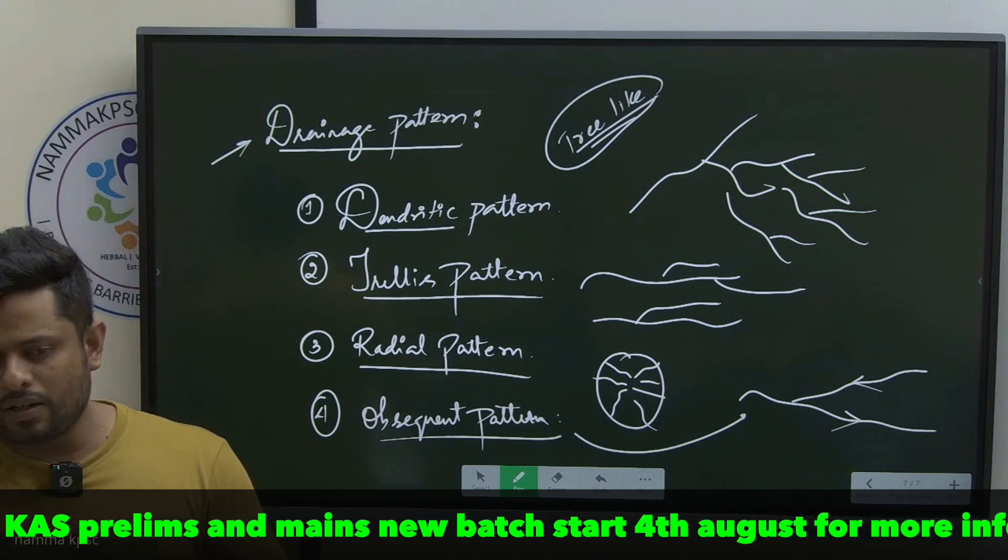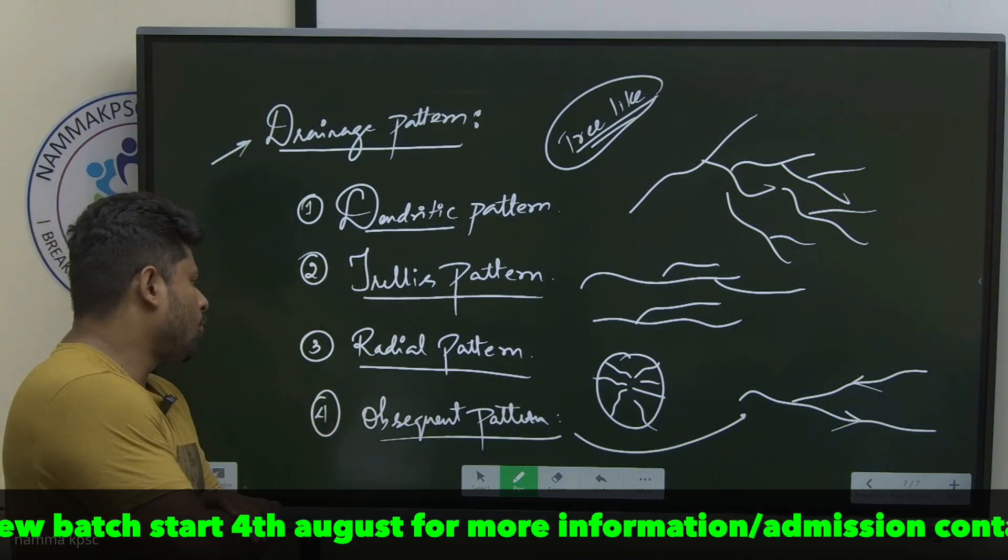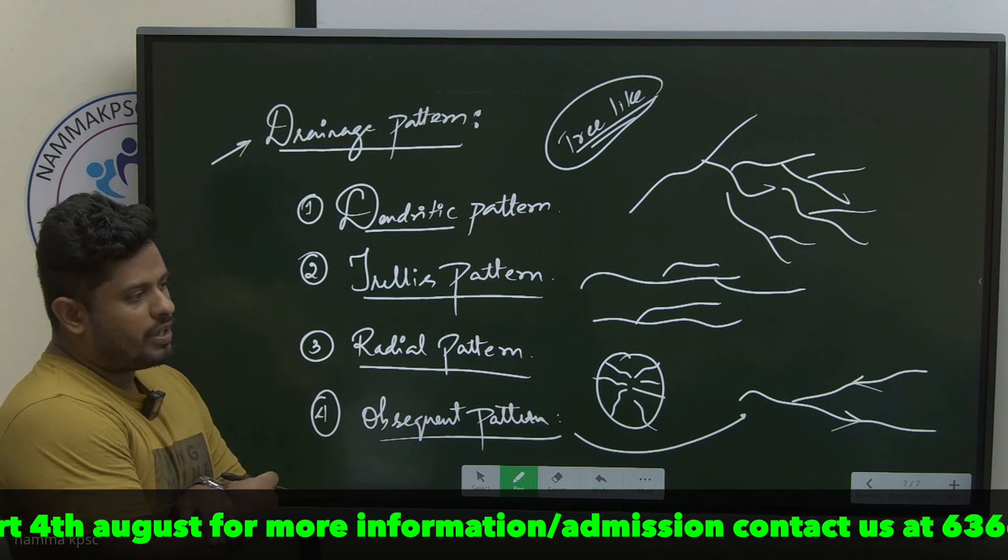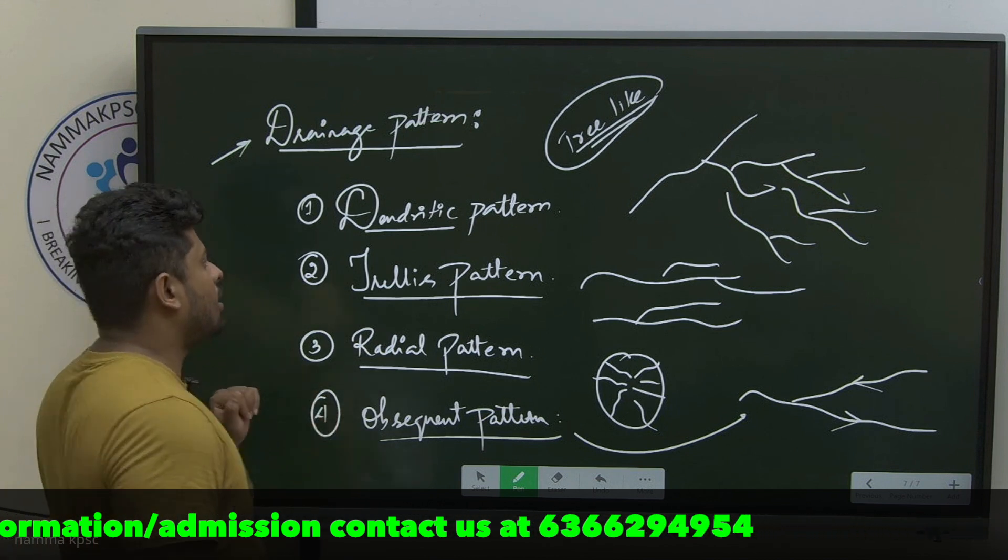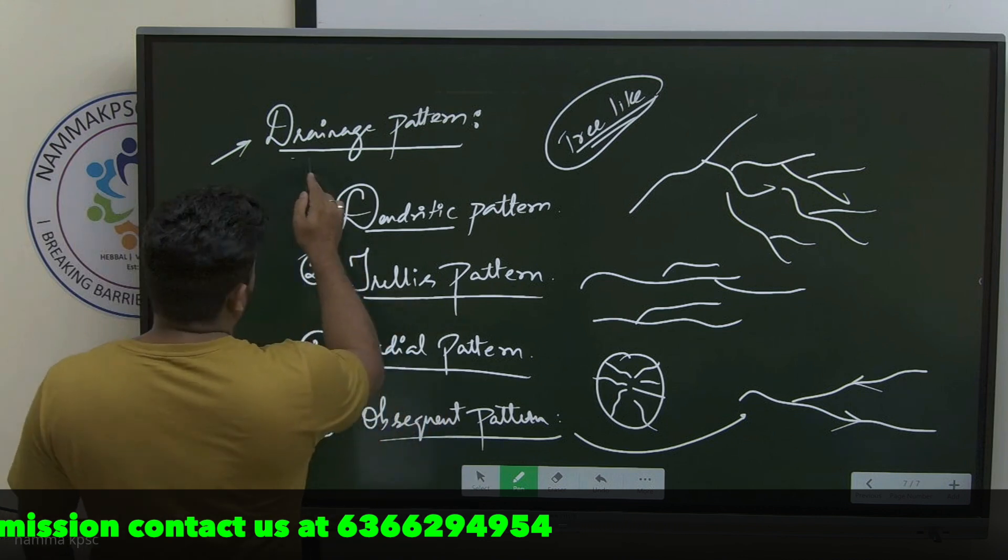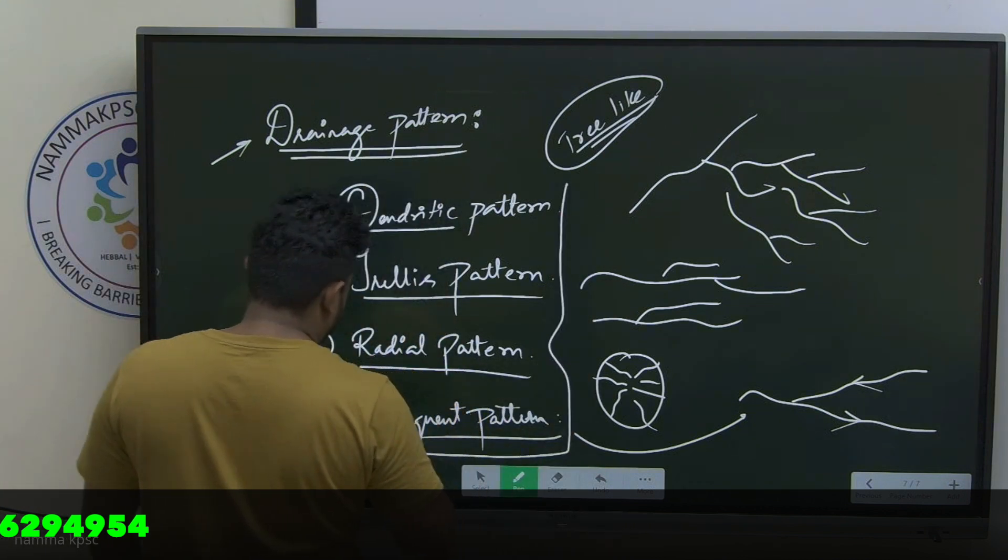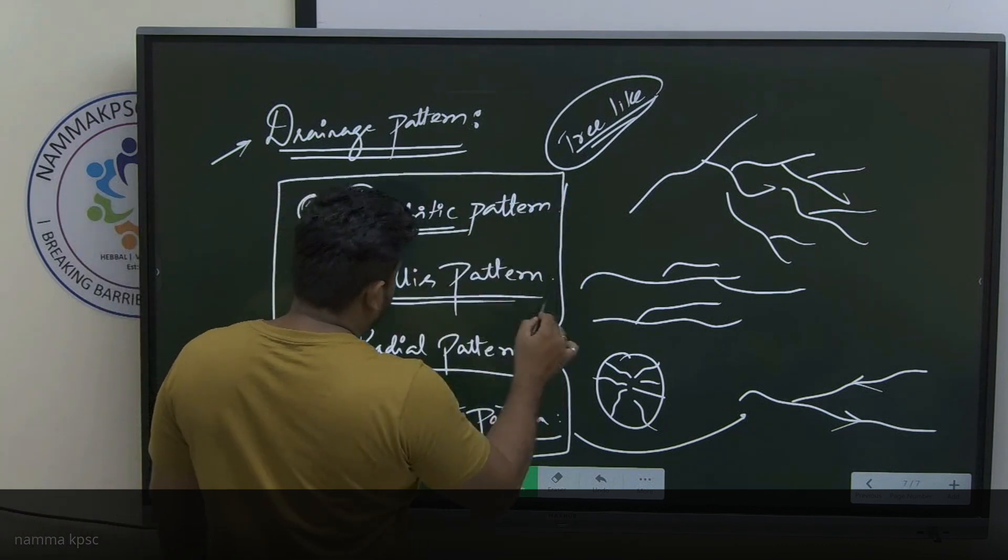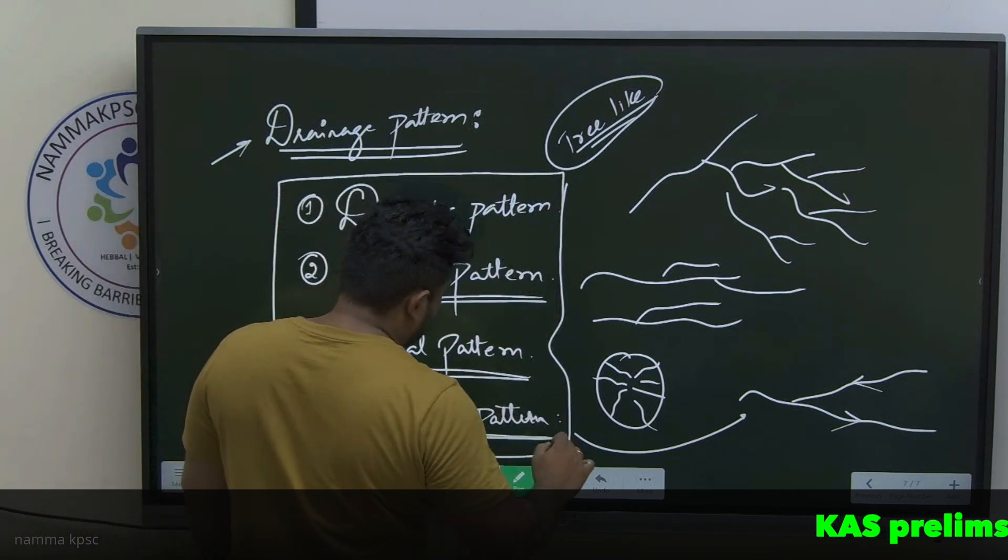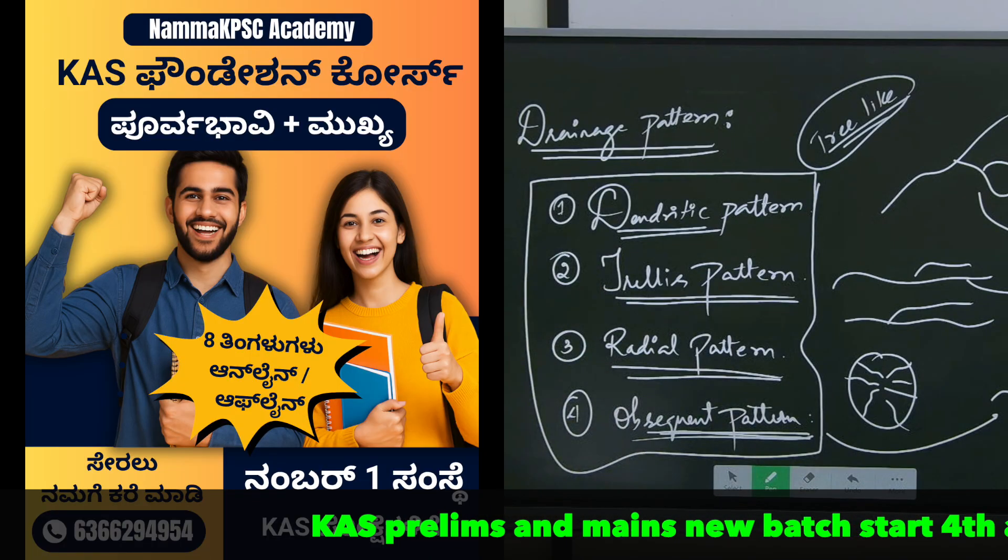Consequent pattern, obsequent pattern, trellis, dendritic, radial - there are so many other geometric patterns also, but it is not feasible for us to complete and it's not required for us. As far as Karnataka geography is concerned, as far as Karnataka drainage system is concerned, there are four major patterns that have been observed. Keep these patterns in mind - whenever we discuss about the river's drainage systems, I'll tell you this follows this pattern.